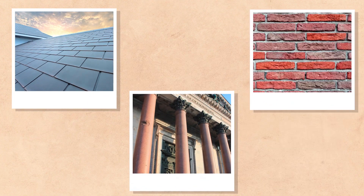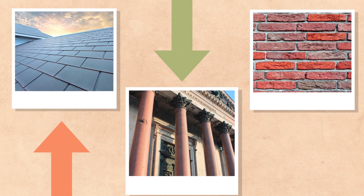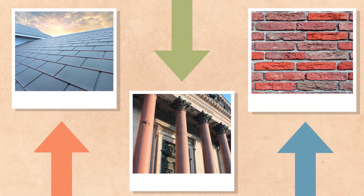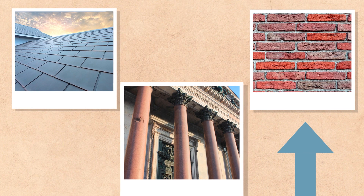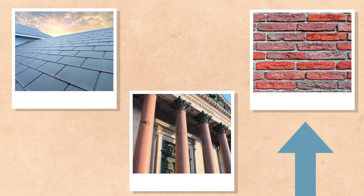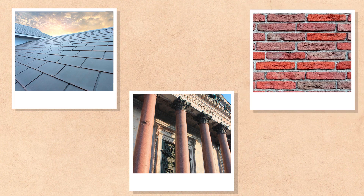Still to this day, rocks like slate, granite, or clay are used in construction — this slate roof, for example, this granite column, or a clay brick.